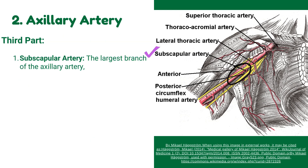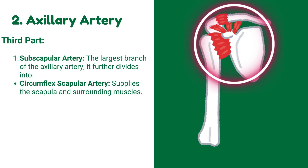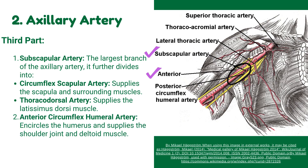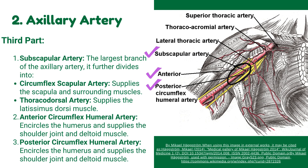The third part includes the subscapular artery, which is the largest branch of the axillary artery. It further divides into the circumflex scapular artery, supplying the scapula and surrounding muscles, and the thoracodorsal artery, supplying the latissimus dorsi muscle. The third part also gives the anterior circumflex humeral artery and the posterior circumflex humeral artery, both of which encircle the humerus and supply the shoulder joint and deltoid muscle.